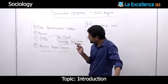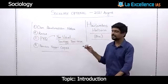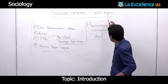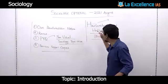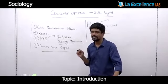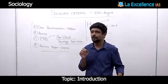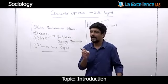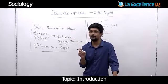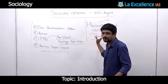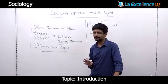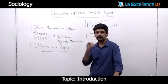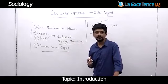Whenever I ask you to read something from the original text — for example, if I teach you social stratification — please go back home and use the weekend to read from the original text. Because when you read from the original text, you develop the art of writing in sociological language, which is very important. Sometimes you may follow it, sometimes you may not, but at least make an attempt so that you understand how to write.